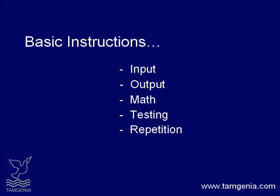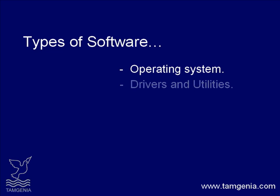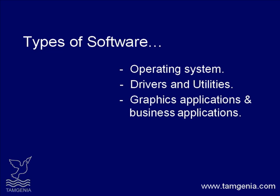No matter how complicated, every program is made of functions similar to these. So programming is breaking up a large, complex task into smaller and smaller subtasks until the subtasks are simple enough to be performed with one of these simple functions. Various types of computer programs or software are available. These are operating systems, drivers and utilities, graphics applications, business applications, and web applications.